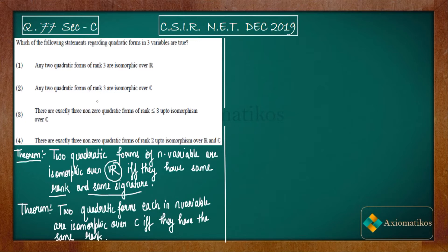Finding a counter-example in the exam can be a little difficult since isomorphism questions are tricky. But by using this theorem — which states that rank and signature must both be equal for isomorphism over ℝ — since option one's statement is incomplete, there must exist a counter-example where two quadratic forms with the same rank are actually not isomorphic over ℝ.